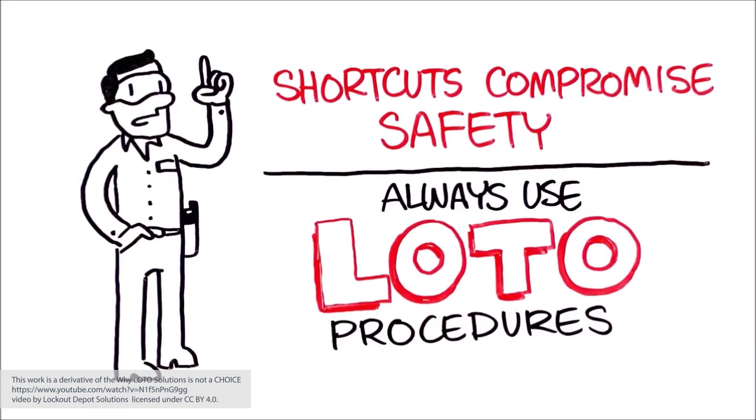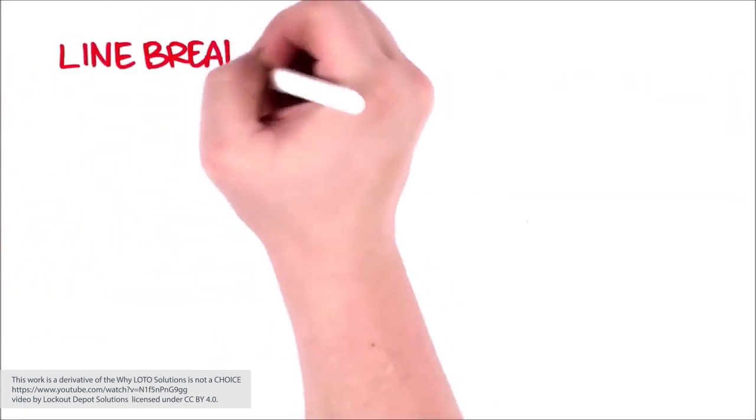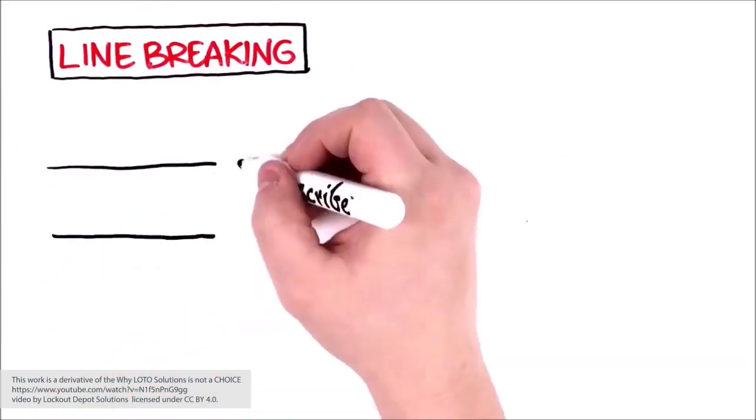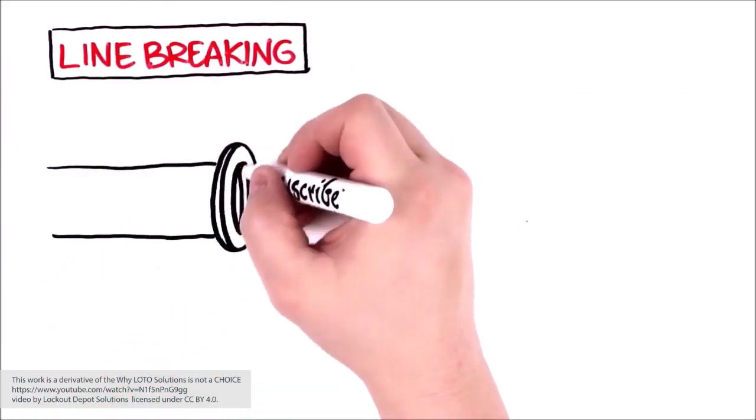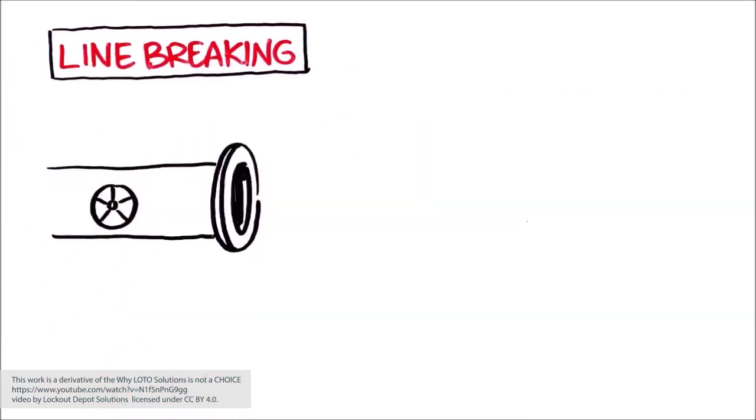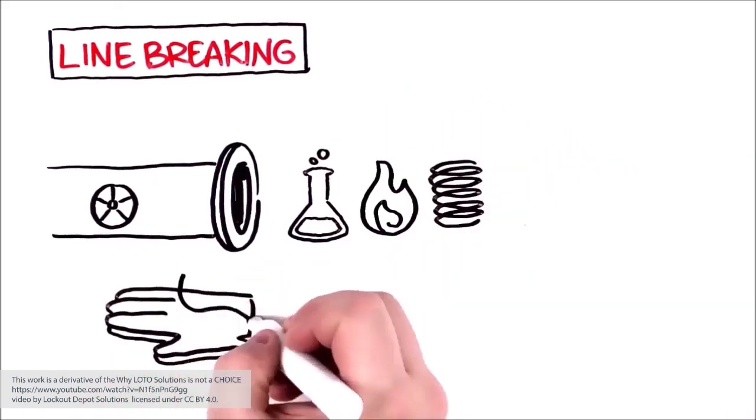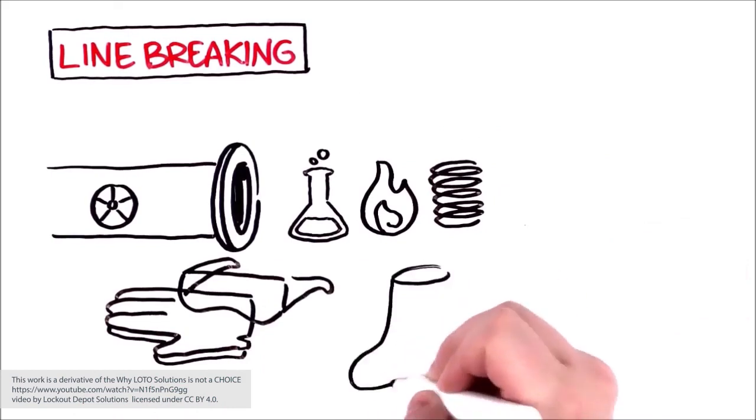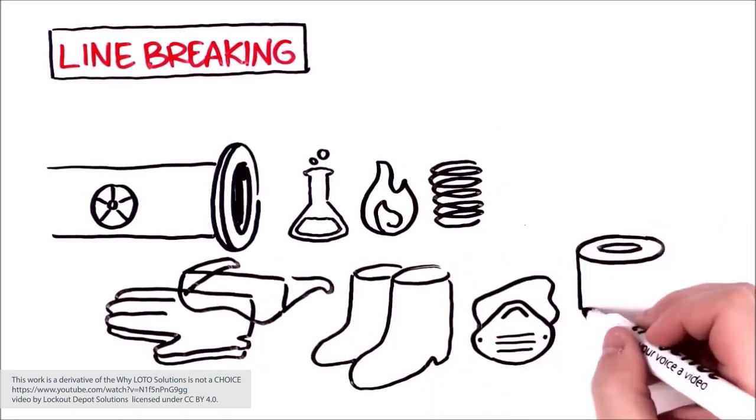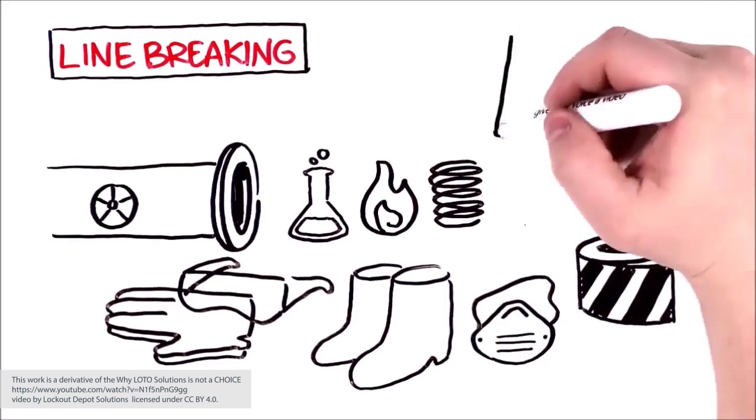Let's talk about unique circumstances you might encounter. Line breaking: this is a special type of hazardous energy control because it involves opening a pipe or vessel that could present a chemical, thermal, or pressure hazard. Take precautions like using personal protective equipment when you need to open a hazardous pipe or vessel, and always understand and follow your site's specific line breaking process.